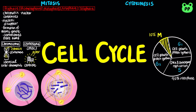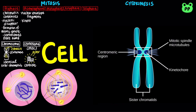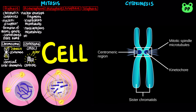During prometaphase, the nuclear envelope fragments. Each of the two chromatids of each chromosome now has a kinetochore, a specialized protein structure at the centromere. Some microtubules attach to the kinetochore, while other microtubules interact with those from the opposite pole of the spindle.